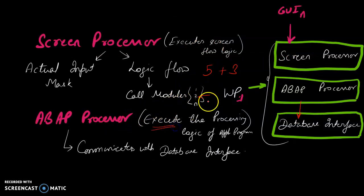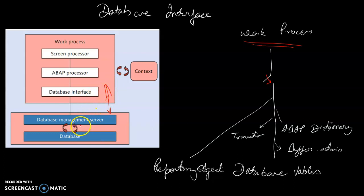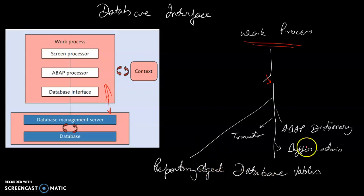The ABAP processor then executes that call module and connects to the database interface. The database interface is a connector between the application layer and the database layer. It also controls buffer management — managing all data between the application and database layers, including database tables, repository objects, buffers, transactions, buffer admin, and the ABAP dictionary.